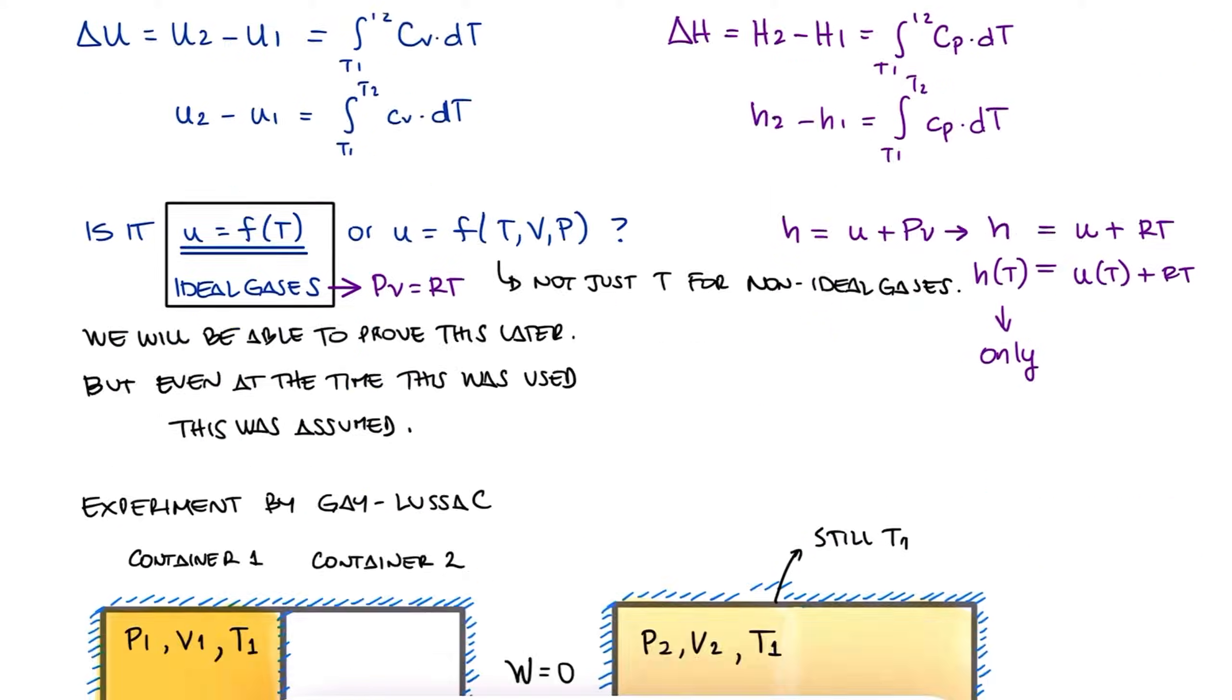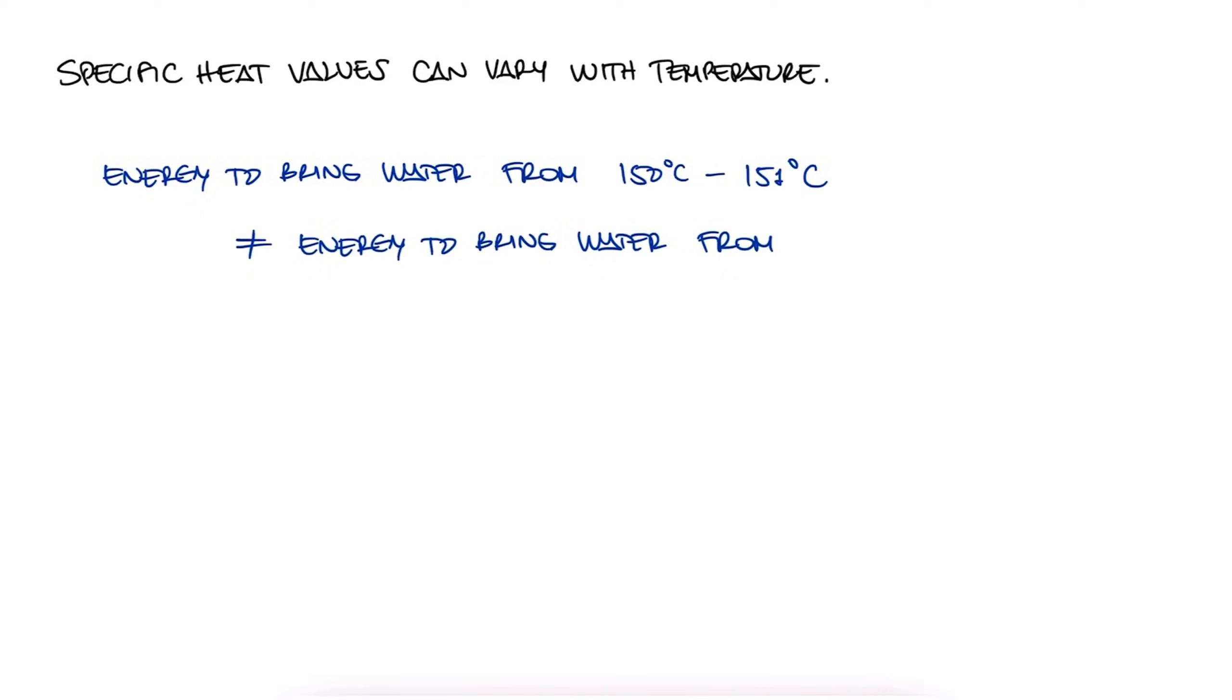Now, the second very important concept here today is that the specific heat values for some substances are not constant. For example, bringing water vapor from 150 to 151 degrees Celsius requires a different amount of energy than bringing it up from 250 to 251.